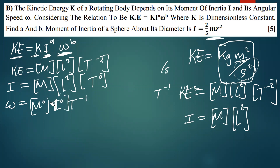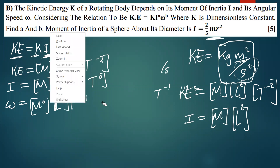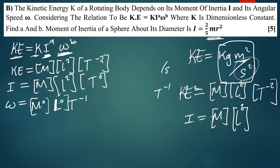A dimension that a lot of people forget: in case the formula you are dealing with involves electric current, the dimension for current is simply A — Ampere.